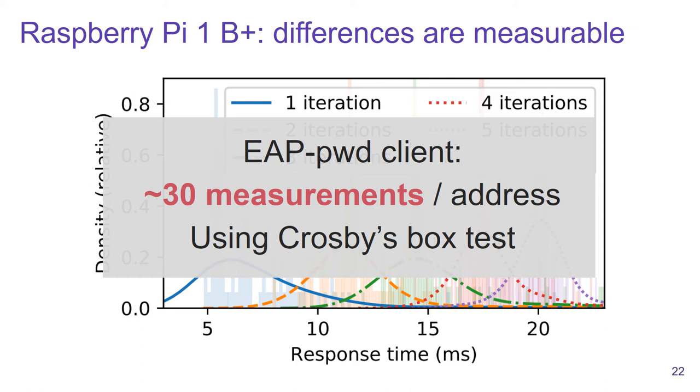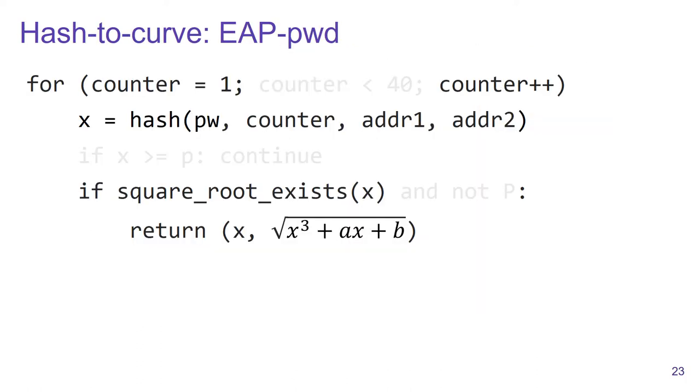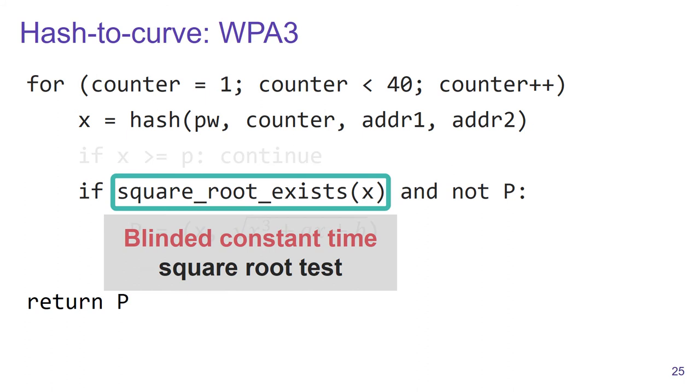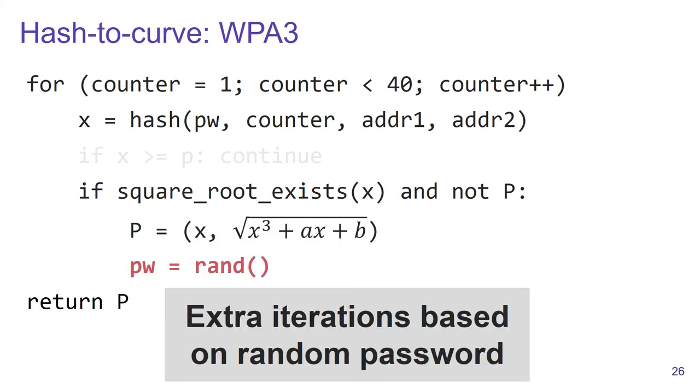That covers the case of the EAP-PWD algorithm. When they standardized WPA3, they did realize that this algorithm had some side channel issues, and they tried to prevent them. The first thing they did with WPA3 is they always made the algorithm execute 40 iterations and returned the first x and y coordinate that lies on the curve. On top of that, they checked whether the x value is on the curve using a blinded constant time test. Additionally, they executed the extra iterations using a random password, again to reduce the chance of any possible side channels.